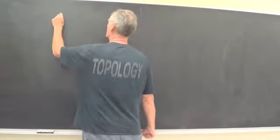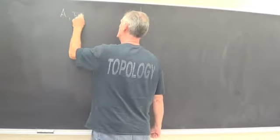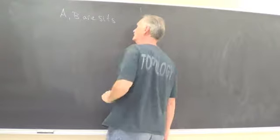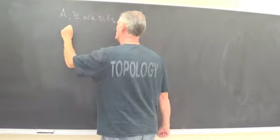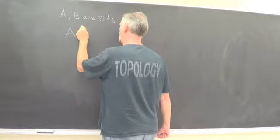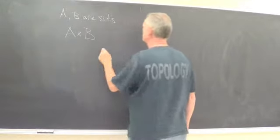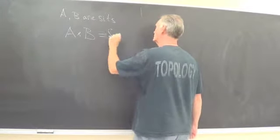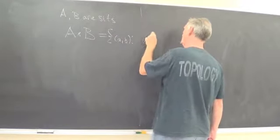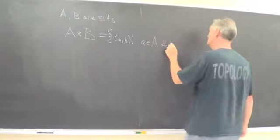So let's suppose that A and B are sets, and we want to set the Cartesian product of A and B to be equal to the set of all ordered pairs A, B, such that A is in A, and B is in B.